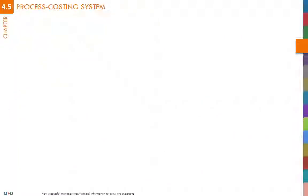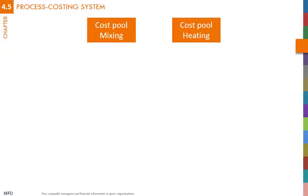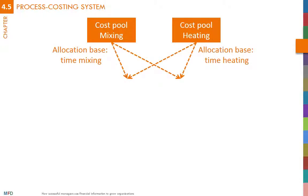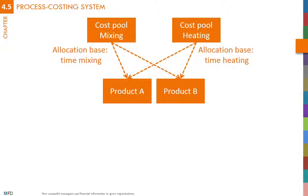Picture a chemical plant that performs two processes: mixing and heating. The costs of the production plant are allocated to these two processes, the cost pools. For each process, an allocation base — usually the time spent in each process — is chosen and used to estimate the cost of the product. Thus, if product A needs two hours of mixing and one of heating per ton, and product B needs one hour of mixing and a half hour of heating, the cost of B is half of the cost of A.